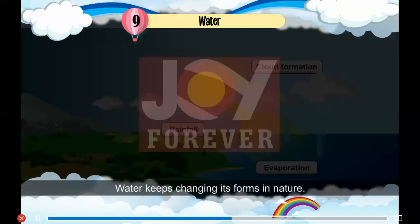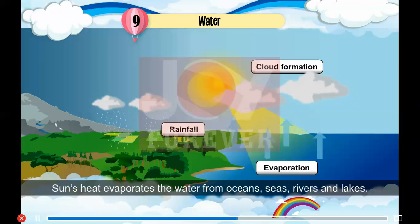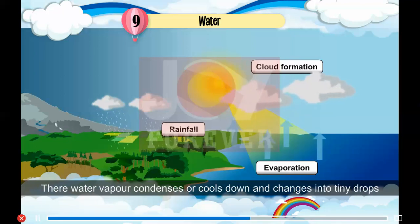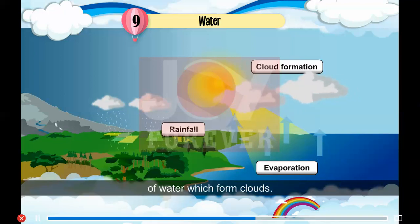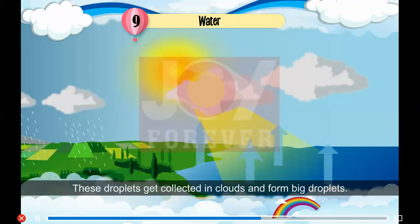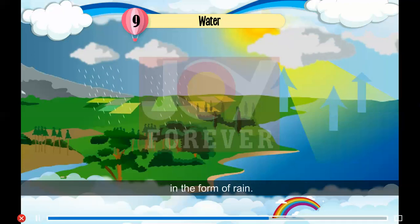Water Cycle. Water keeps changing its forms in nature. The sun's heat evaporates water from oceans, seas, rivers and lakes. This water changes into water vapour and goes up in the air. There, water vapour condenses or cools down and changes into tiny drops of water which form clouds. These droplets get collected in clouds and form big droplets, which become heavy and fall down on earth in the form of rain.